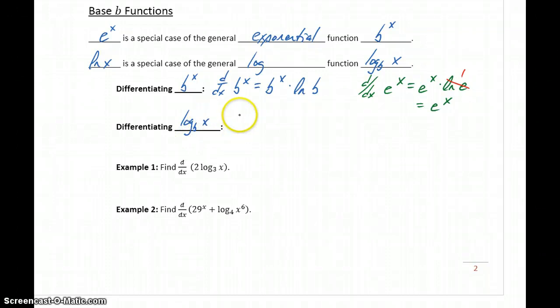Similarly, for differentiating the log base b of x, we still get 1 over x, which is similar to how we differentiated the natural log function, but we need 1 over x times the natural log of whatever that base is.